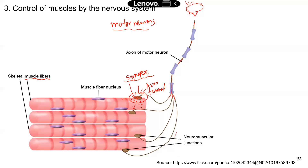This is how the nervous system controls muscle cells — through electrical signals transmitted through the axons. When it gets to the axon terminals, it's switched to chemical signals, which are neurotransmitters. The synapse is also known as the neuromuscular junction, which is more specific to muscle cells.